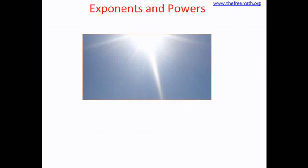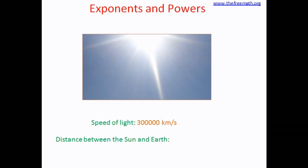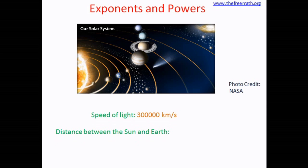Do you know the speed of light? The speed of light is this big number — there are five zeros after three, that many kilometers per second. And when light travels from the sun to us, to the earth, do you know how much distance it covers? Do you know the distance between the sun and earth?